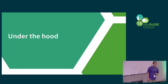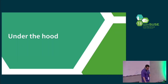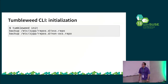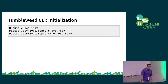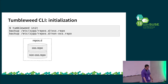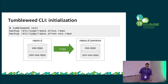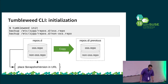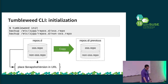So let's take a look at how Tumbleweed Snapshots accomplishes this, starting with the client-side command line. When you run init, it only modifies the main OSS and non-OSS repositories from Tumbleweed — the rest are obviously not snapshotted, but it backs them up for you, placing them in the repos directory in a hidden folder called 'previous'. It also introduces the snapshot version into the URL, which allows your repository URLs to point to different snapshots easily.